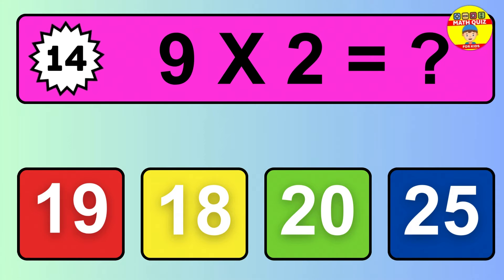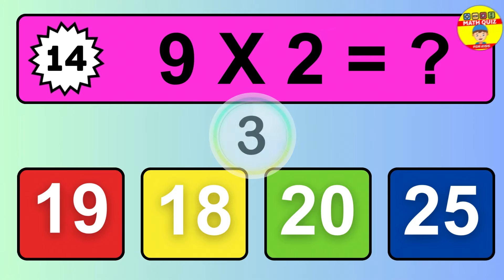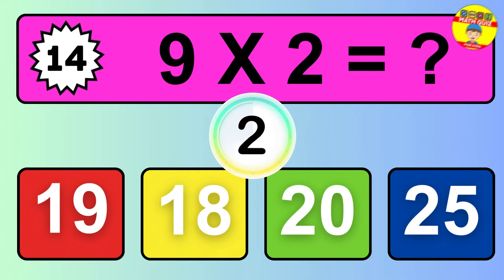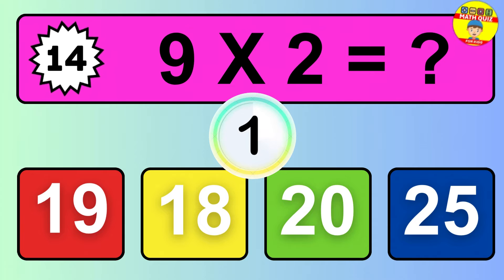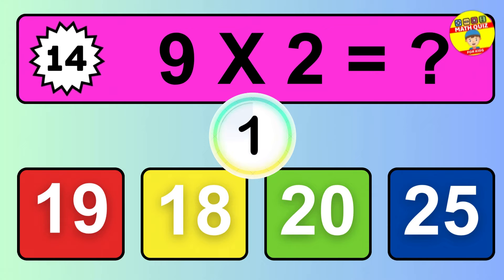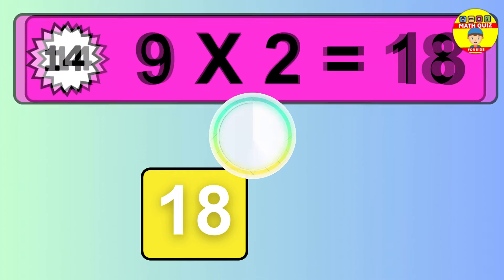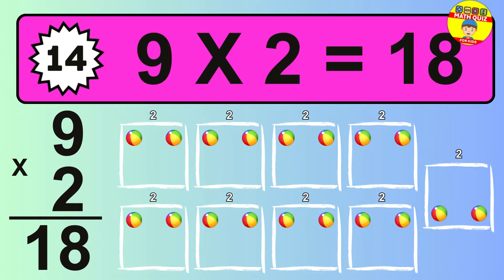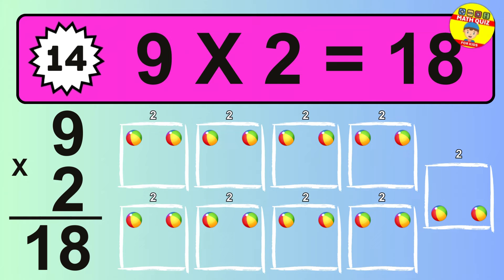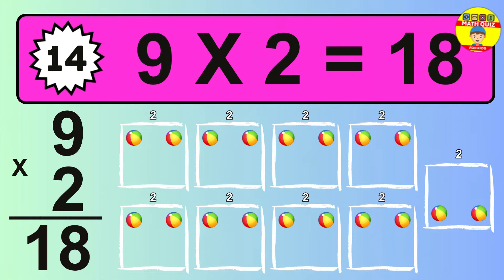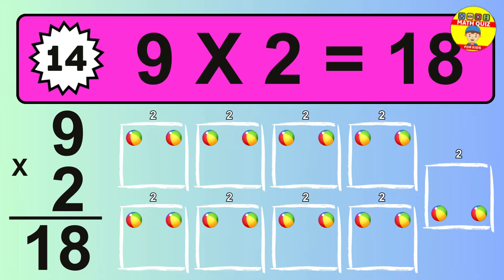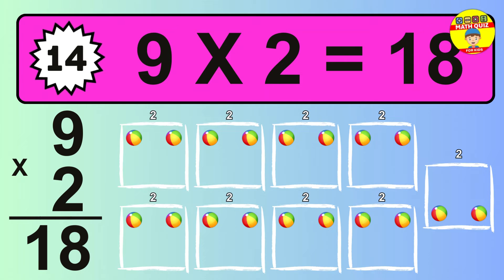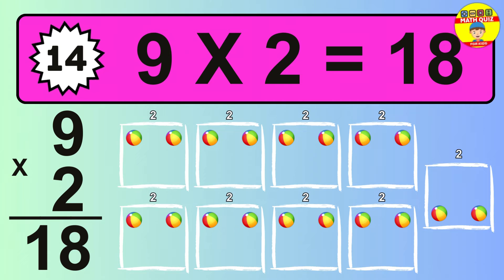Question 14. Nine times two equals what? The answer is nine times two is 18. To calculate, we have nine groups with two balls each one. So, how many balls do we have? 18 balls.